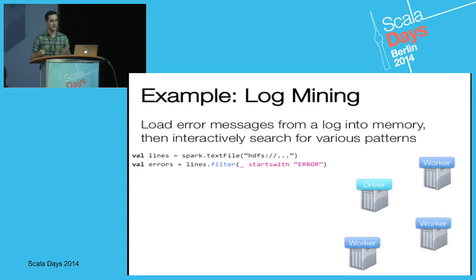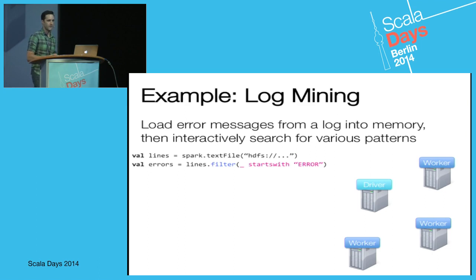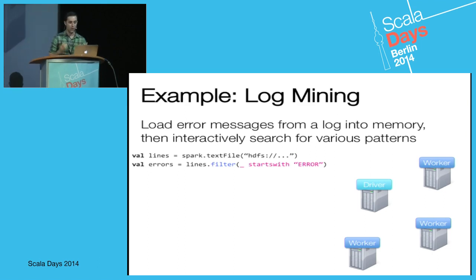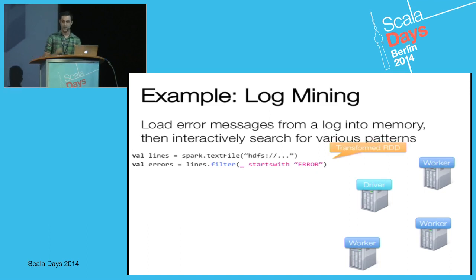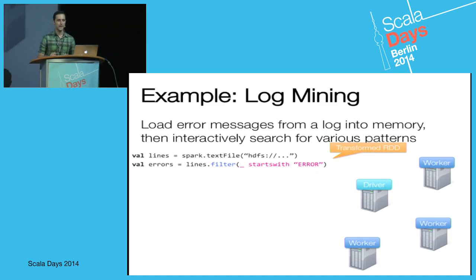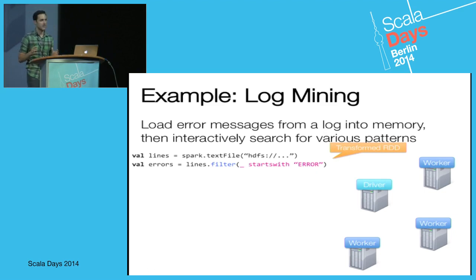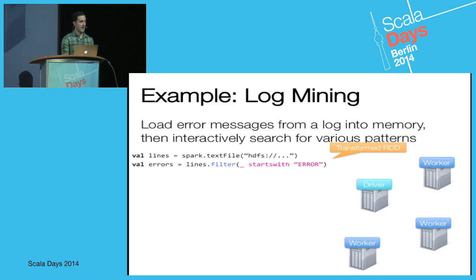Now we want to do a transformation on it. We'll start by filtering out any lines that aren't describing an error — we only want the error messages. Now we've got a transformed RDD. A key concept is that at this point, no computation has happened. All we're doing is building up the lineage, and the creation of lineage is lazy, which allows better optimization when you actually ask us to perform an action.